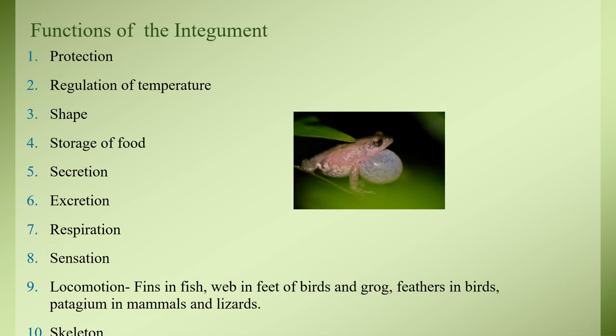Now we will see the functions of integument. There are many functions, which is why integument is called the 'jack of all traits.' The functions are: first, protection; second, regulation of temperature; third, determining shape and rigidity; fourth, storage of food; fifth, secretion; sixth, excretion; seventh, respiration; eighth, sensation; ninth, locomotion; and tenth, skeleton.